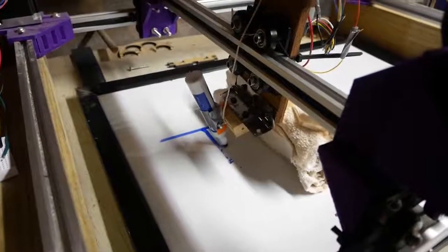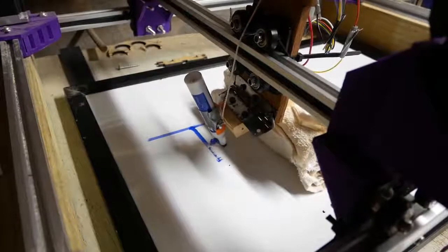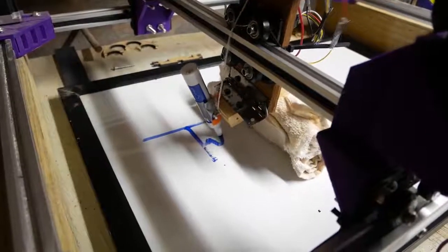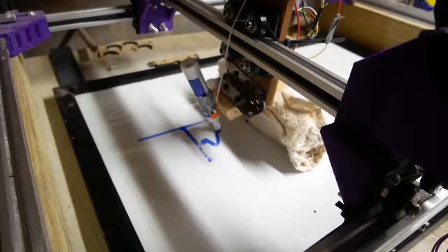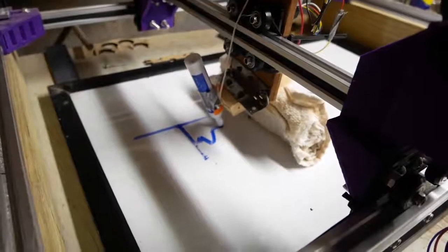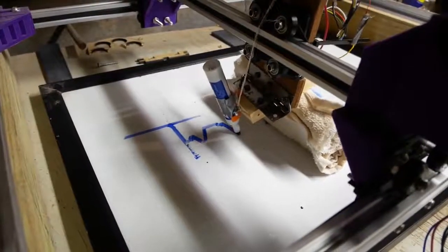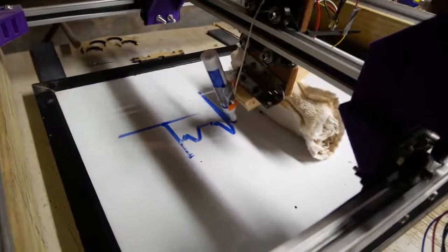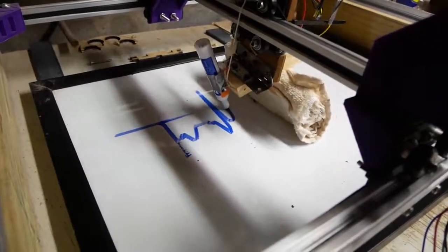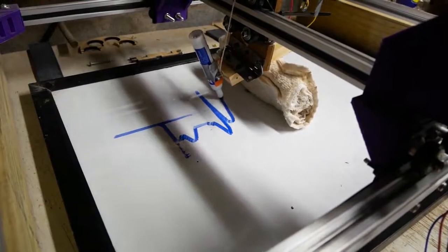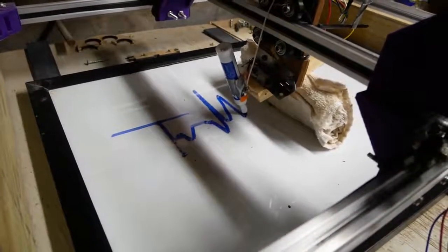We will now run a demonstration of the EKG signal being run on the CNC plotter. You can see the full QRS complex and T wave that occurs during a patient's normal breathing cycle. The values can be seen continuously until the CNC plotter reaches the edge of the frame before needing to erase and reset the pen.